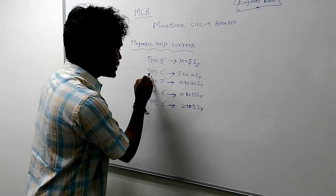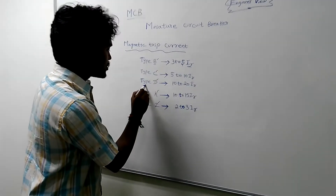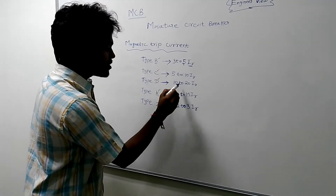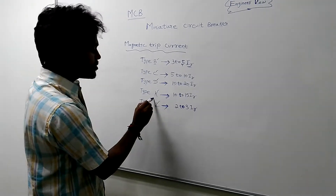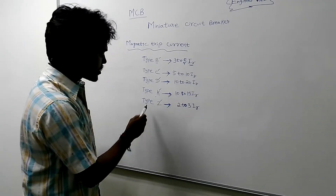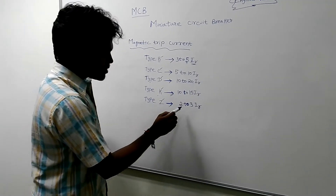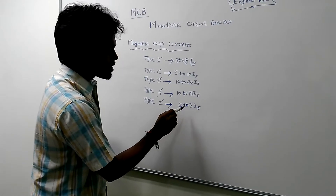Type C trips at 5 to 10 times the full load current. Type D trips at 10 to 20 times the full load current. Type K trips at 10 to 15 times the full load current. Type Z trips at 2 to 3 times the full load current.